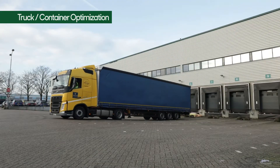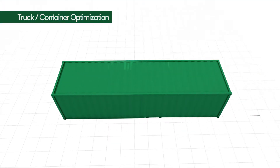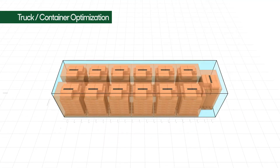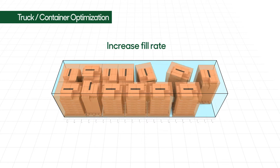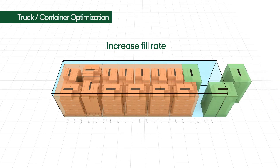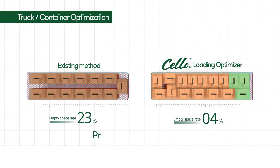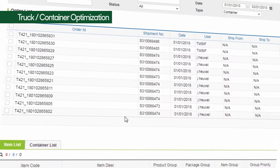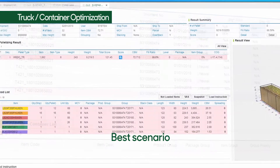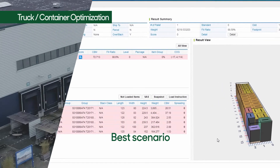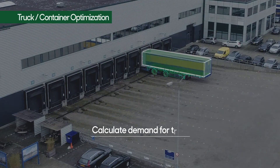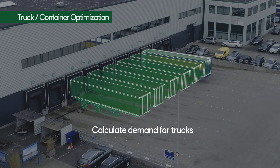Once the palletizing is complete, Cello Loading Optimizer enables the operator to optimize the containers and trucks loading. Optimizing the truck and container fill rates significantly reduces the empty space and the risk of product damage. The best scenario presented by Cello Loading Optimizer also accurately calculates the truck demand.